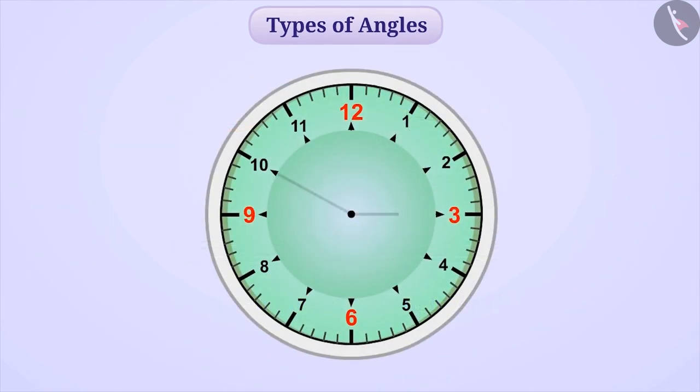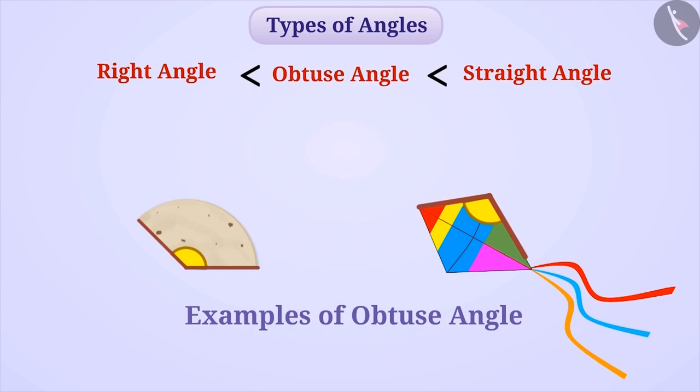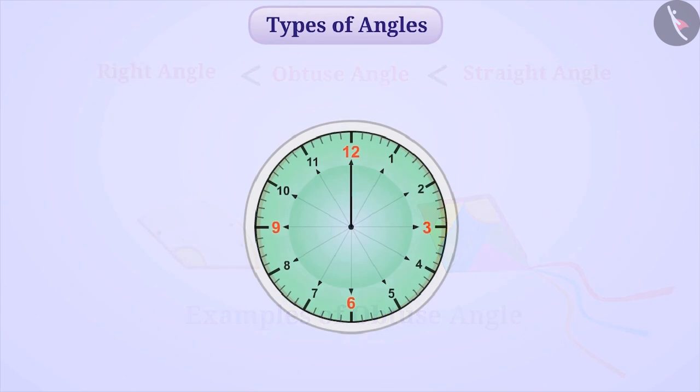Take a look at this clock here. Here, the hands of the clock are making an angle greater than a right angle but smaller than a straight angle. Such angles are called obtuse angles. Some examples of obtuse angles are as follows. Pause the video and give it a thought.